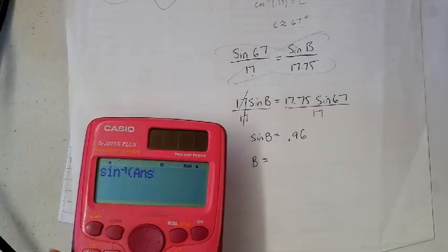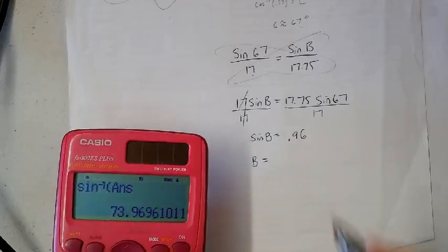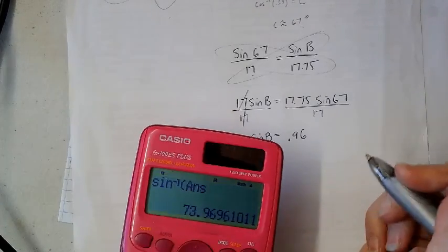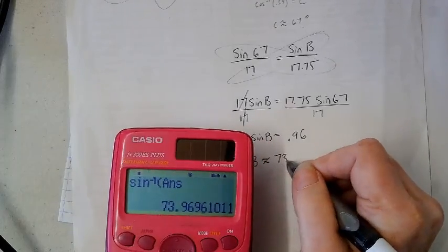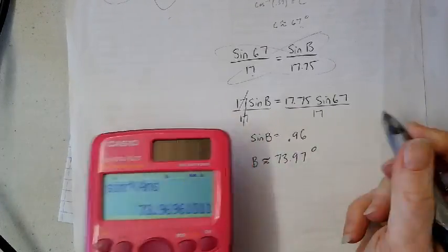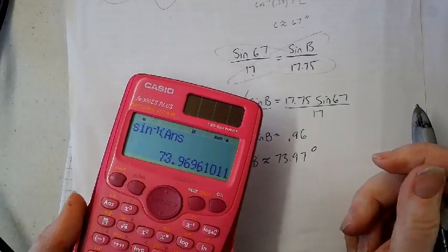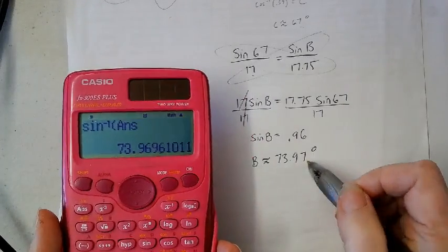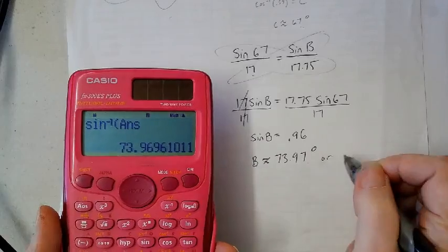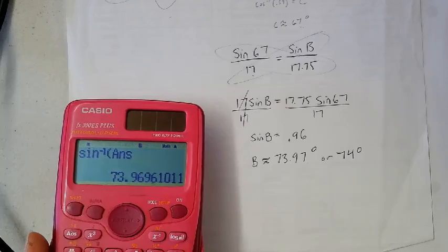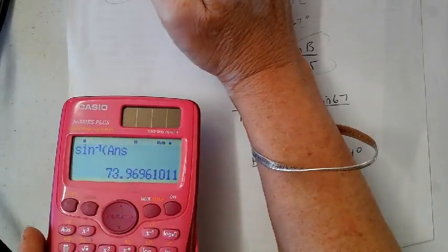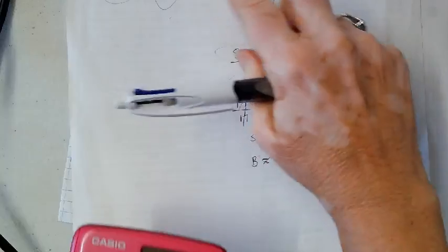Then I know that I can get B by itself if I inverse sine both sides. So B is going to be the inverse sine of this number. This number is already in my calculator, so I can go shift sine answer. That's how my calculator works. And I got B is about 73.9. I'm going to see how your book rounds it. Your book's going to round it to 74 degrees, so I'll stick that in for B.